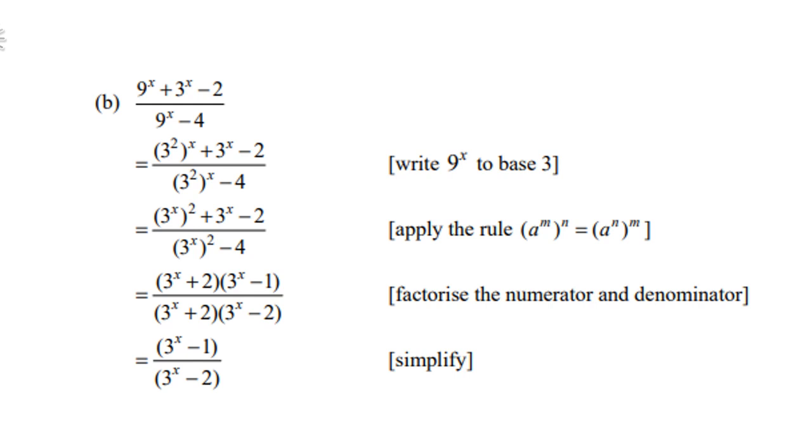Then, you cancel the two brackets, which are the same. Namely 3 to the power x plus 2. 3 to the power x plus 2 cancel. And you're left with 3 to the power x minus 1 over 3 to the power x minus 2.